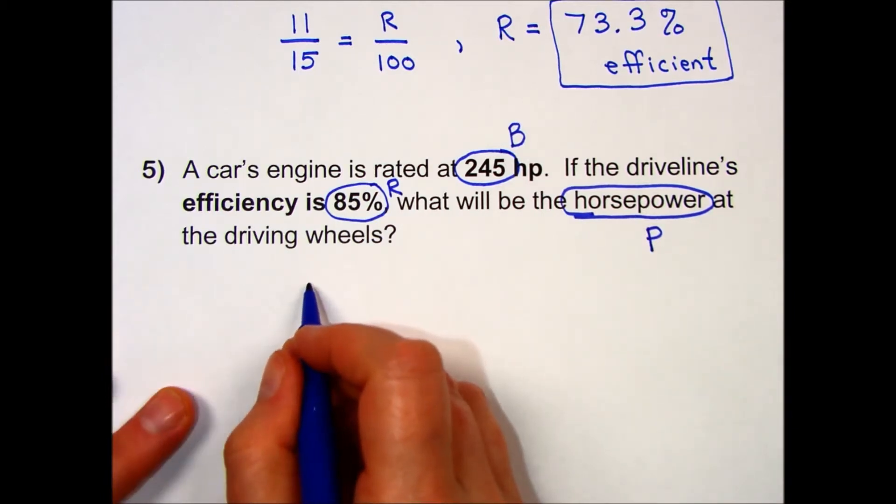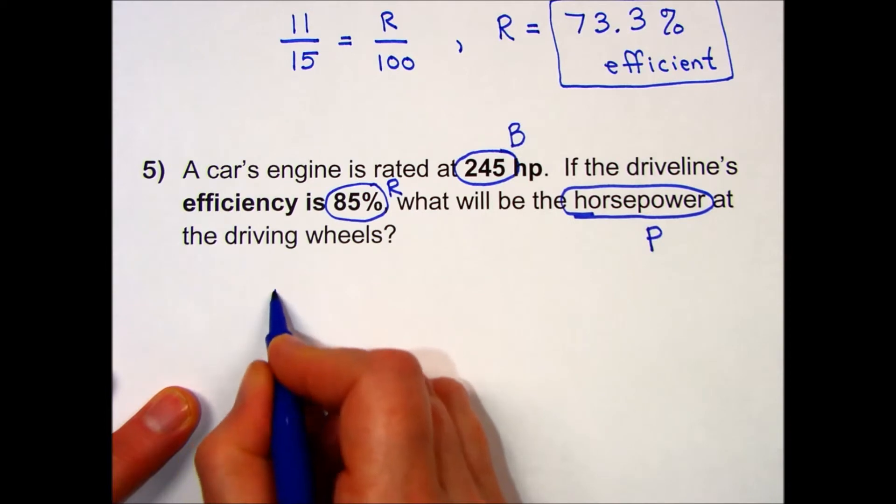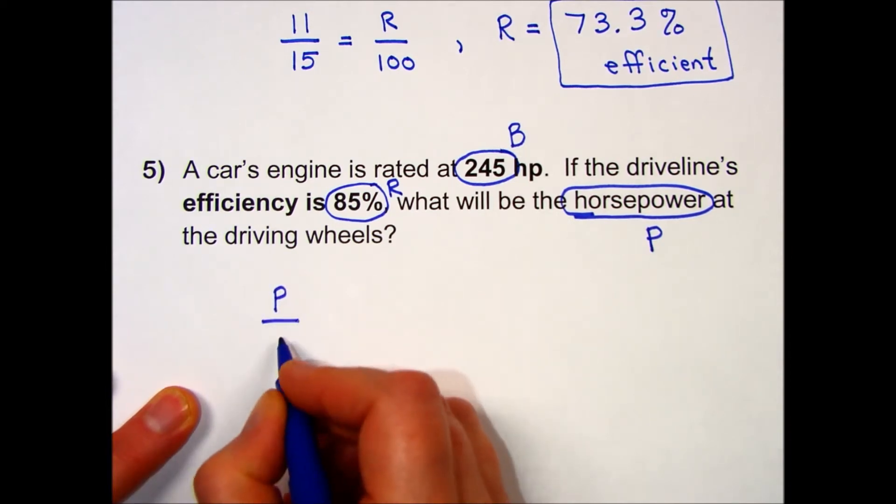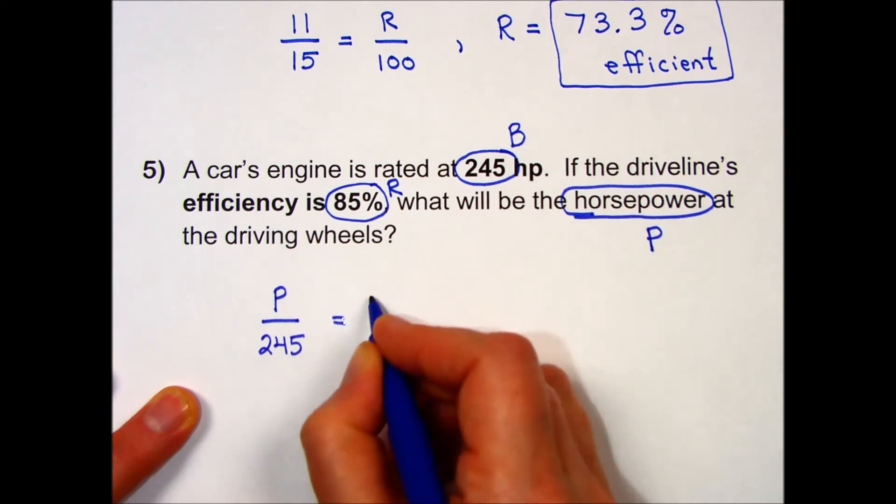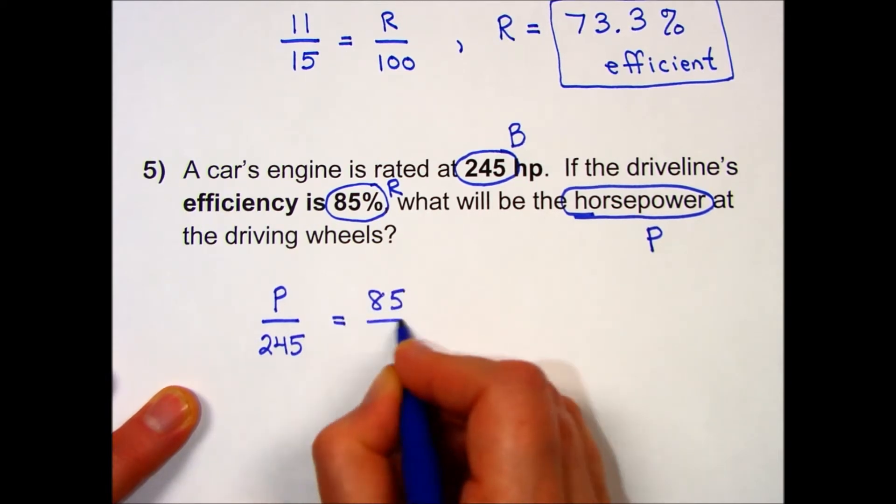Using my formula, I have part over base equals rate over 100.